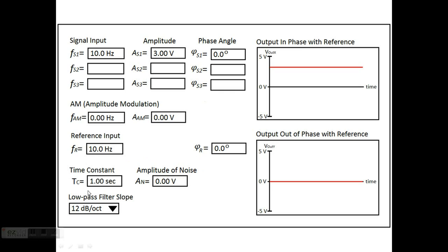We can also input a time constant for the low-pass filter and the low-pass filter slope. Throughout this tutorial we're going to leave the low-pass filter at 12 decibels per octave.